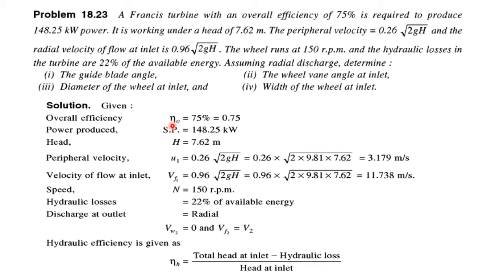Given data: overall efficiency 75%, shaft power 148.25 kW, head 7.62 meters, peripheral velocity U1 = 0.26√(2gh) = 3.179 m/s, velocity of flow at inlet Vf1 = 0.96√(2gh) = 11.738 m/s, speed 150 rpm, hydraulic losses 22% of available energy.